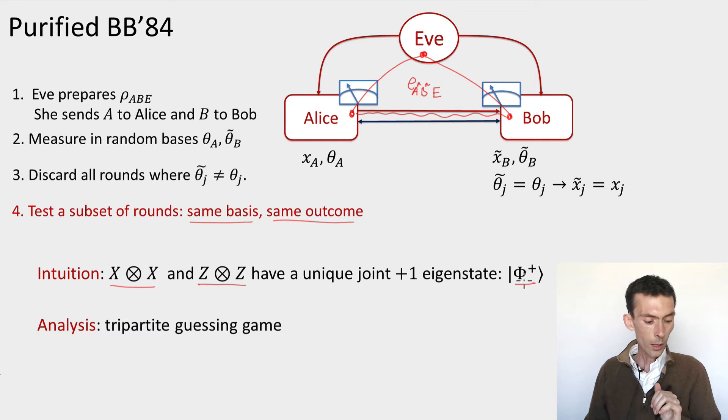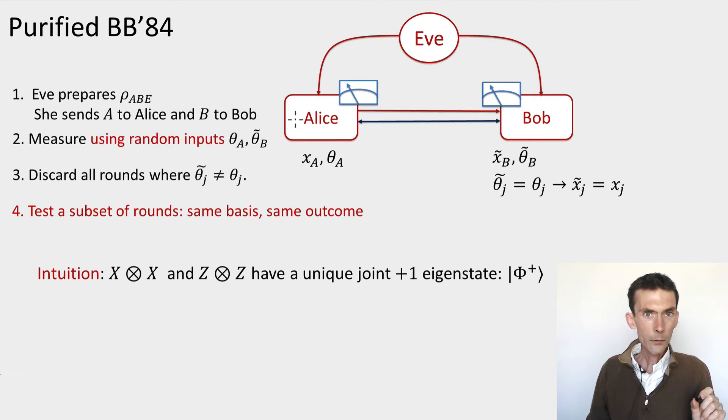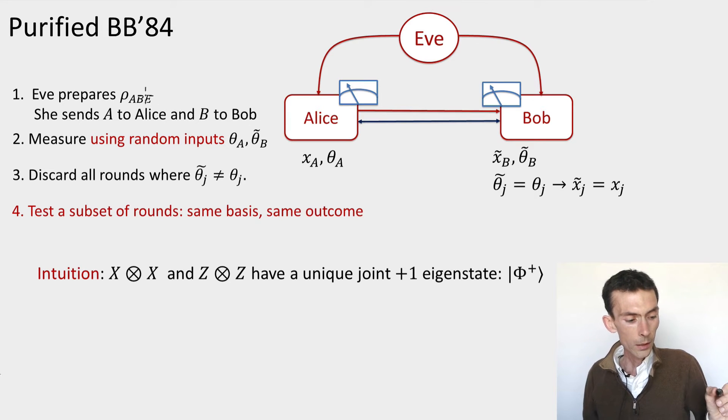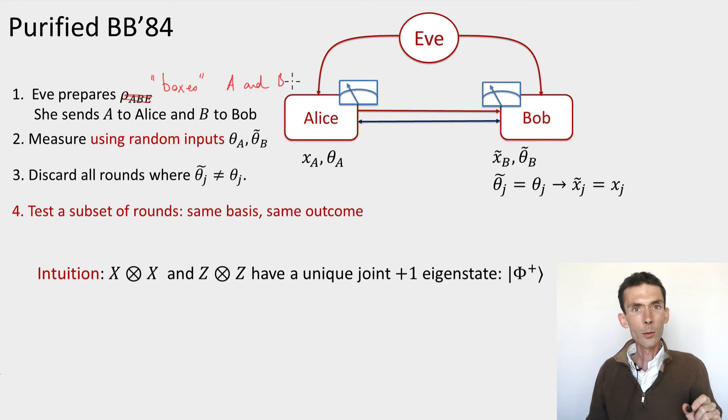Now let's look at the same thing, but now in the fully device independent setting. What changes exactly? So the main difference now is that I'm not assuming that Alice and Bob receive qubits, and I'm not assuming that they know what measurement they're performing. So let's go over the setup carefully.